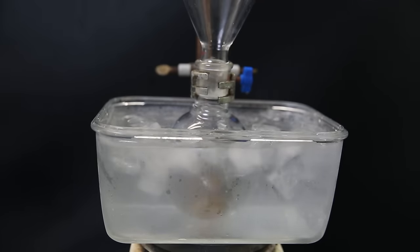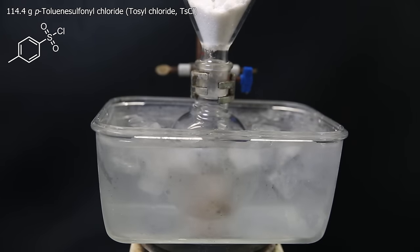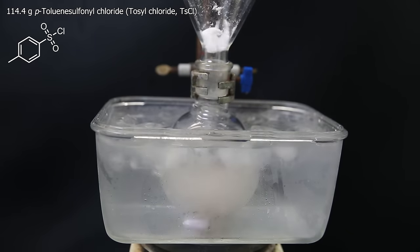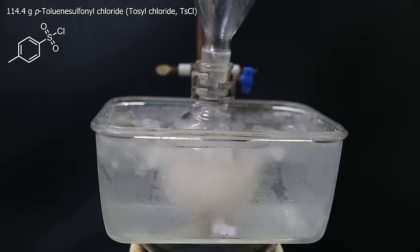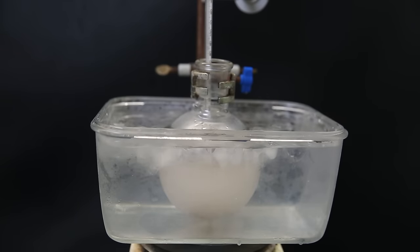And then attach a funnel, and add in 114g of p-toluene sulfonyl chloride, also called tosyl chloride, or shortened to TsCl. I then let this stir for a few minutes, to allow it to cool down.